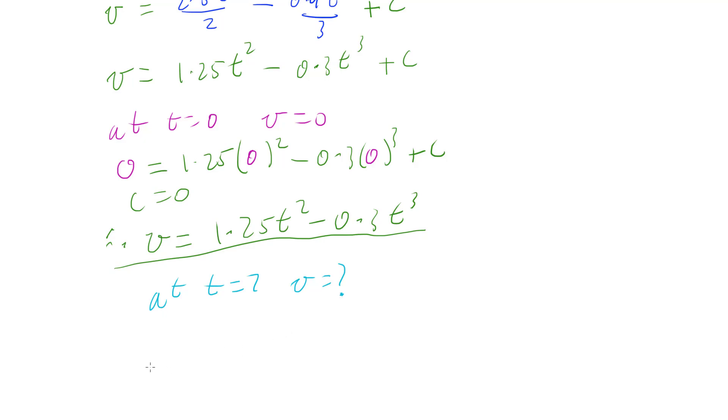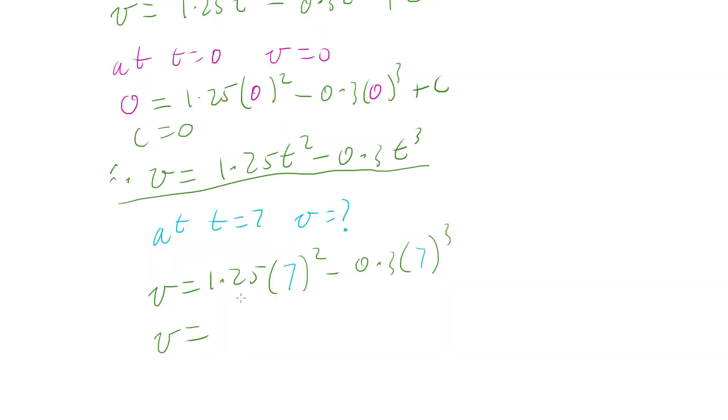So we got velocity is going to be 1.25 multiplied by 7 squared minus 0.3 multiplied by 7 cubed. And so working this out, we get minus 41.65 meters per second. So our velocity at 7 seconds is negative 41.65.